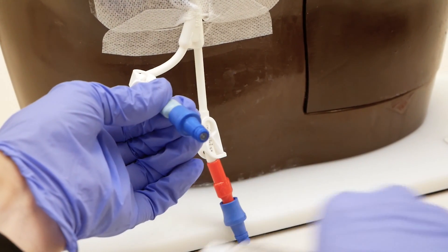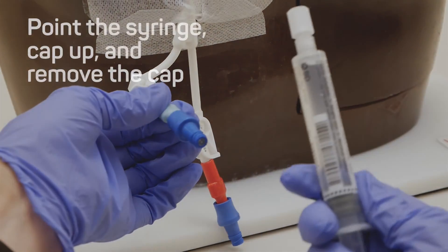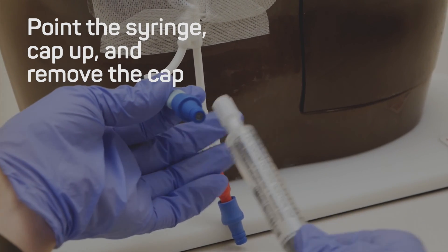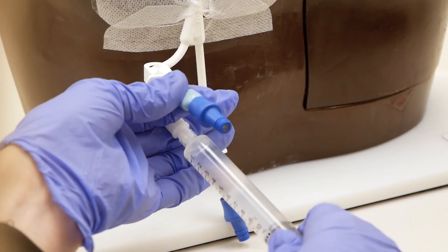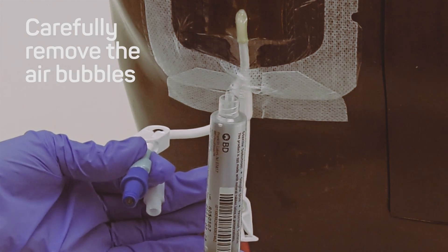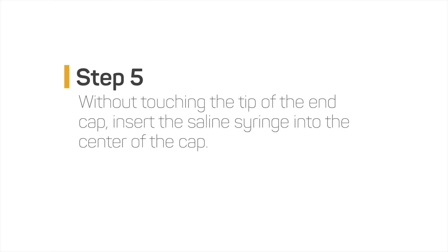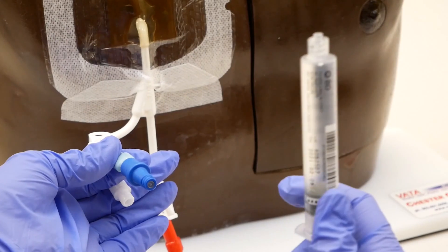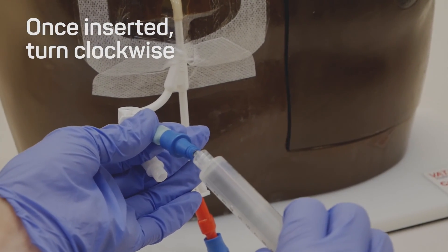Step four: prepare one saline syringe, point the syringe cap up and remove the cap. Step five: without touching the tip of the end cap insert the saline syringe into the center of the cap. Once inserted turn clockwise.